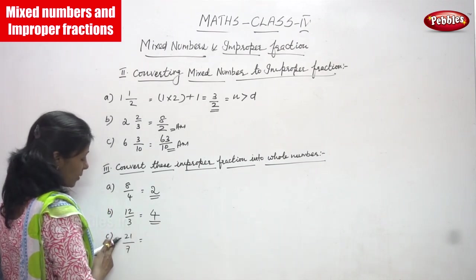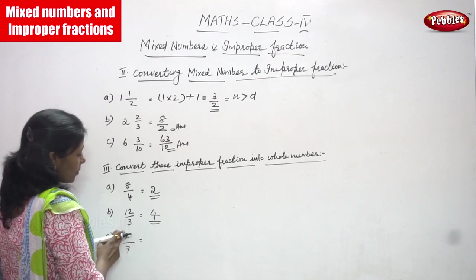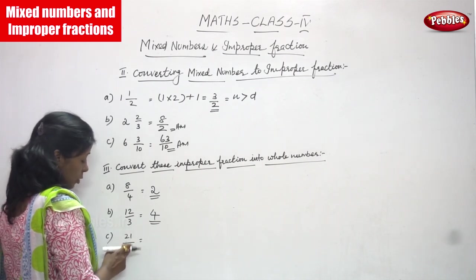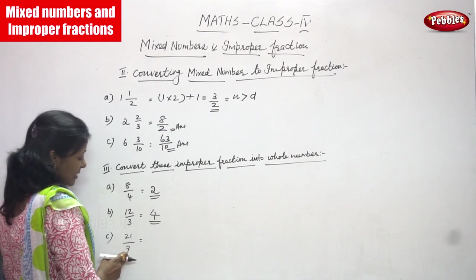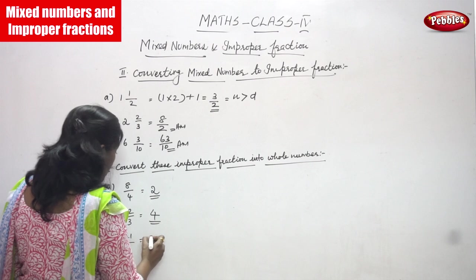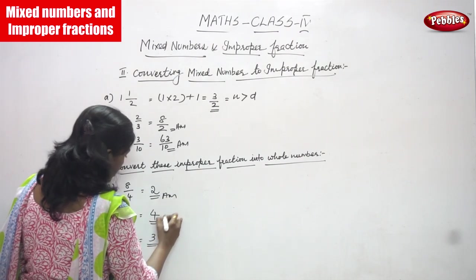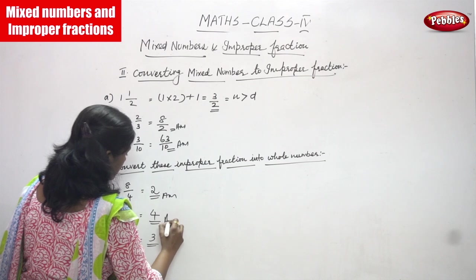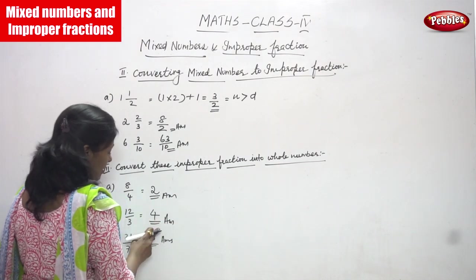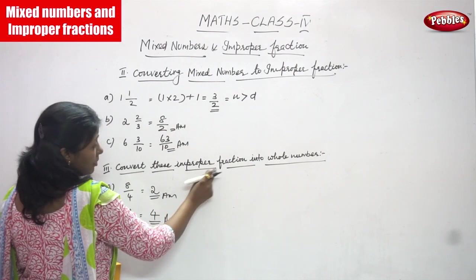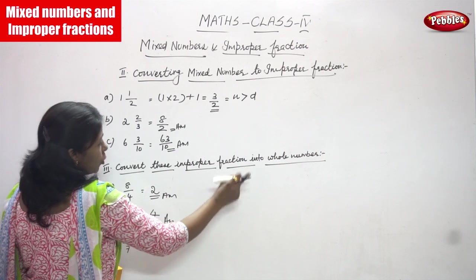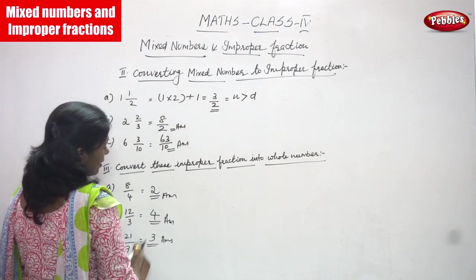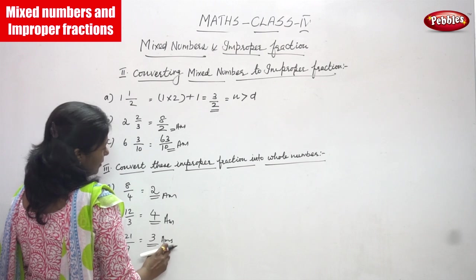21 divided by 7: 21 is the numerator and 7 is the denominator, so it is an improper fraction. Using the 7 times table: 7 ones are 7, 7 twos are 14, 7 threes are 21. So 3 is the answer. Now we have 2, 4, and 3 as whole numbers — all improper fractions have been converted into whole numbers.